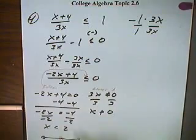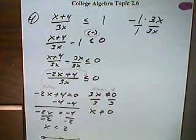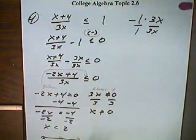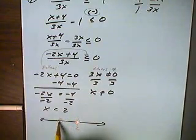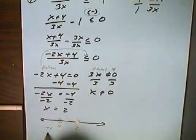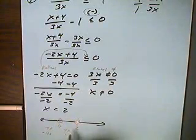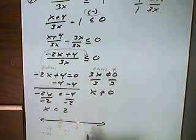Now we need to test each of these areas, whether they're going to be negative pieces or positive pieces — and we're looking for the negative pieces. For the leftmost area, I'm going to use a test point of negative 100. For the middle area, I'm going to use a test point of 1. And for the rightmost area, I'm going to use a test point of positive 100.